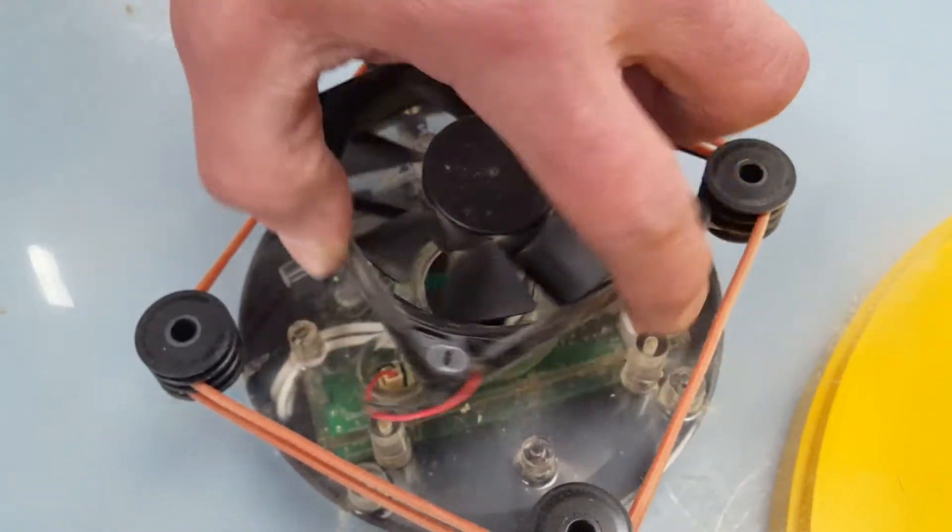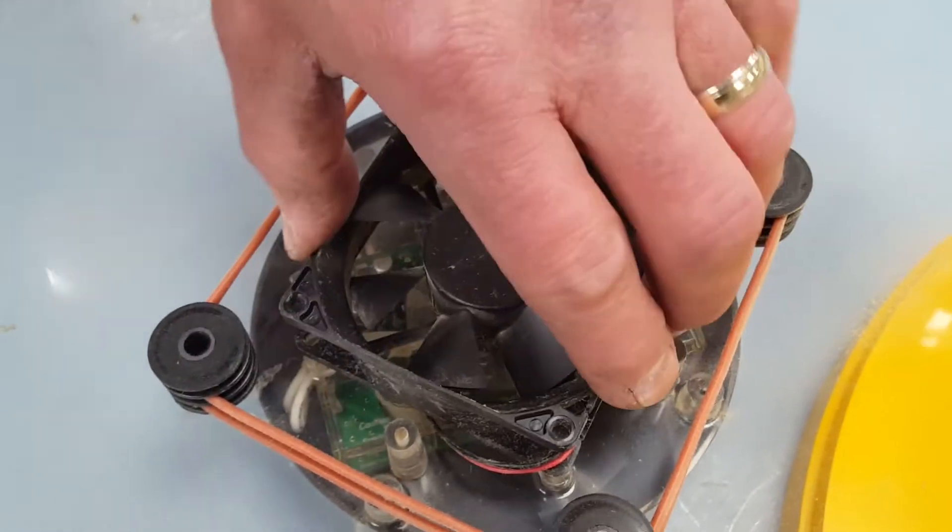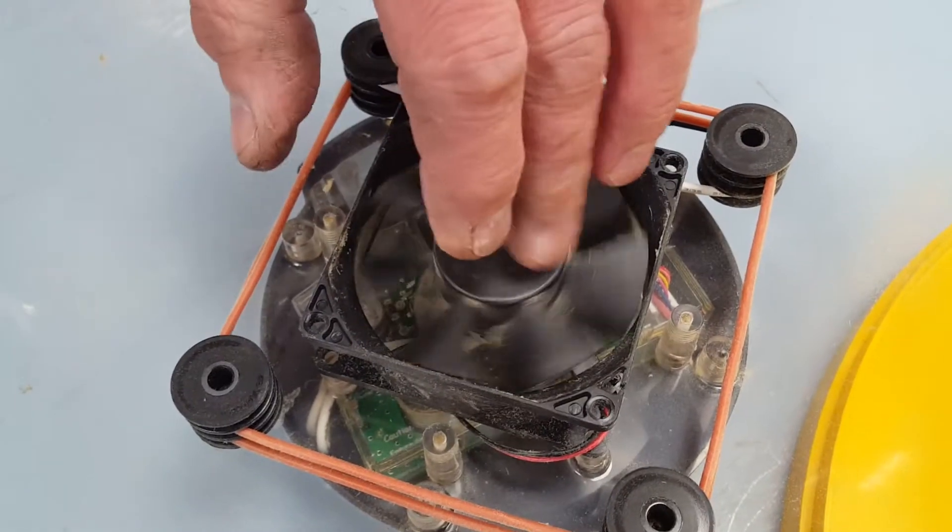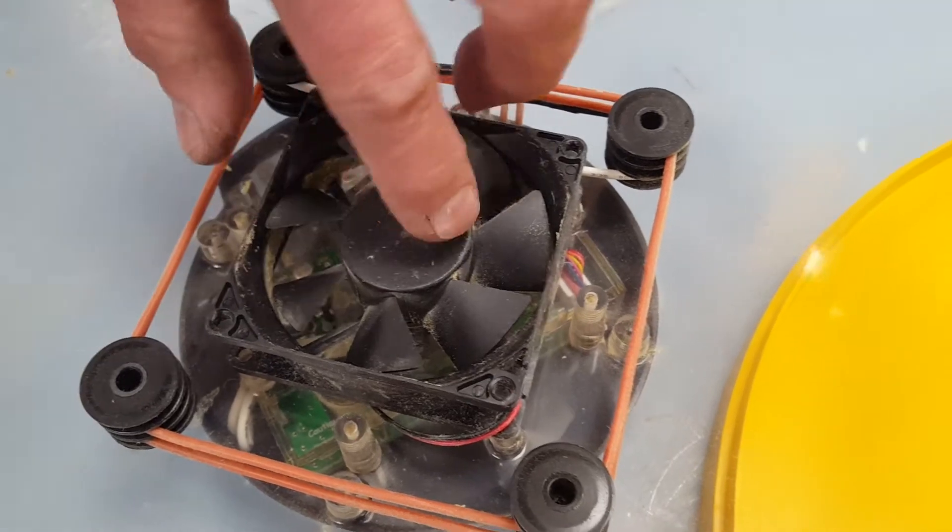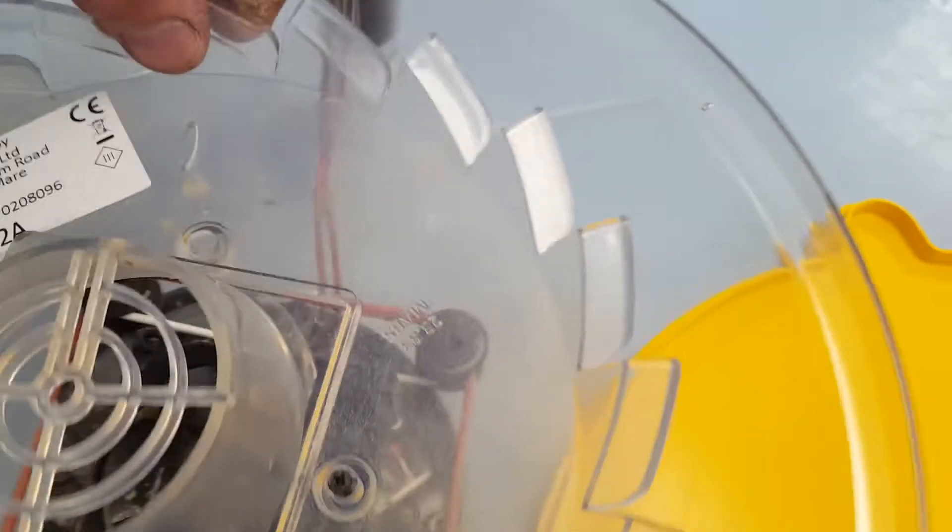Just make sure that the connection leads, you can fit it a couple of ways around like that. We normally fit them out that way, just to take the slack out of the wires. Just make sure the wires aren't in there and it spins freely. And that's it. Then revert, bolt the top back down.